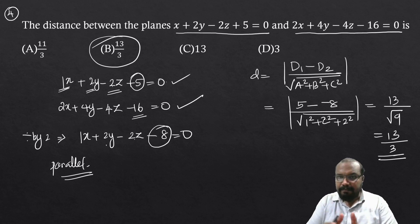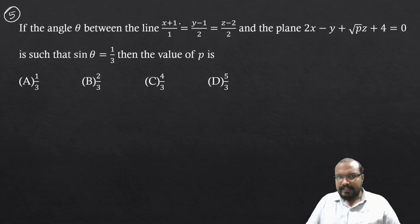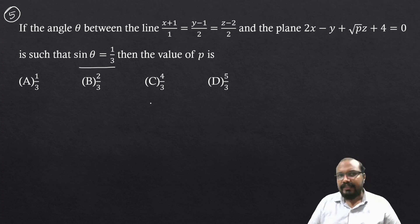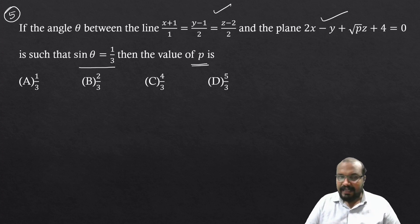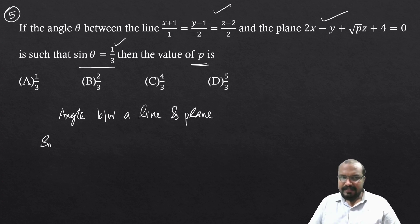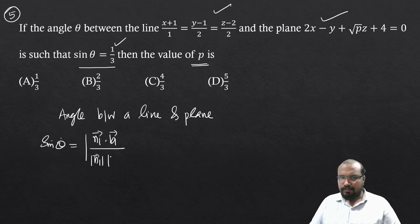Clear — distance between parallel planes. Question number five: For the line (x+1)/1 = (y-1)/2 = (z-2)/2 and the plane 2x - y + √p·z + 4 = 0, sin theta = 1/3. Find the value of p. We use the angle between a line and a plane formula: sin theta = |n dot b| divided by (|n| × |b|).